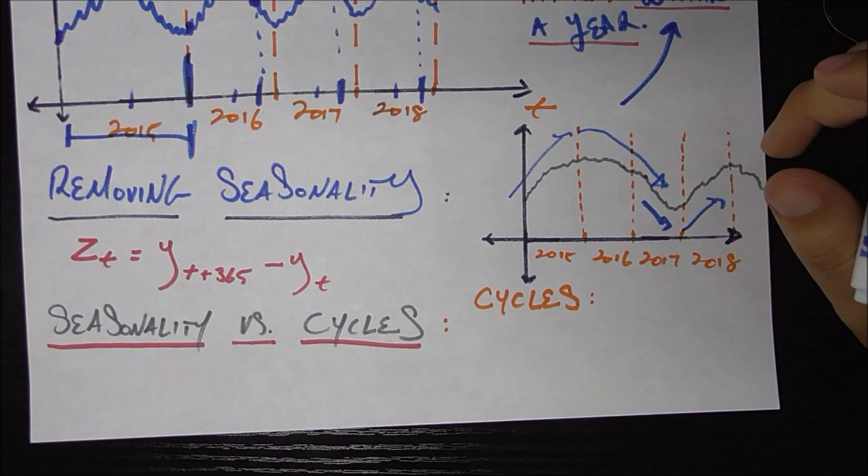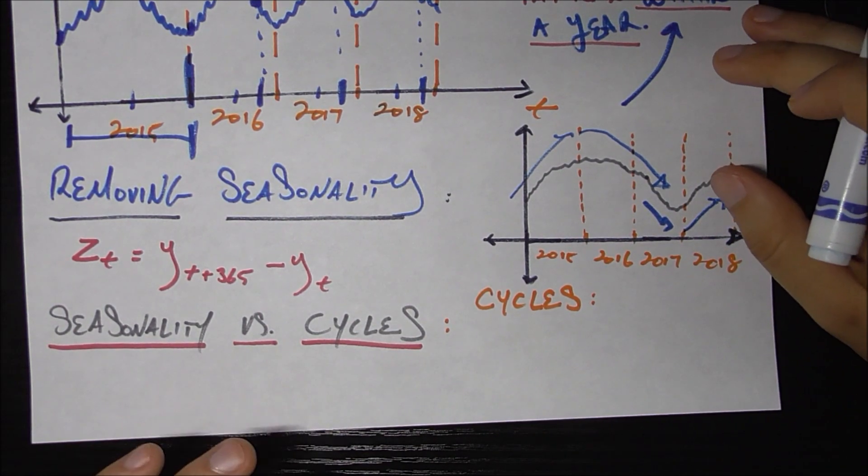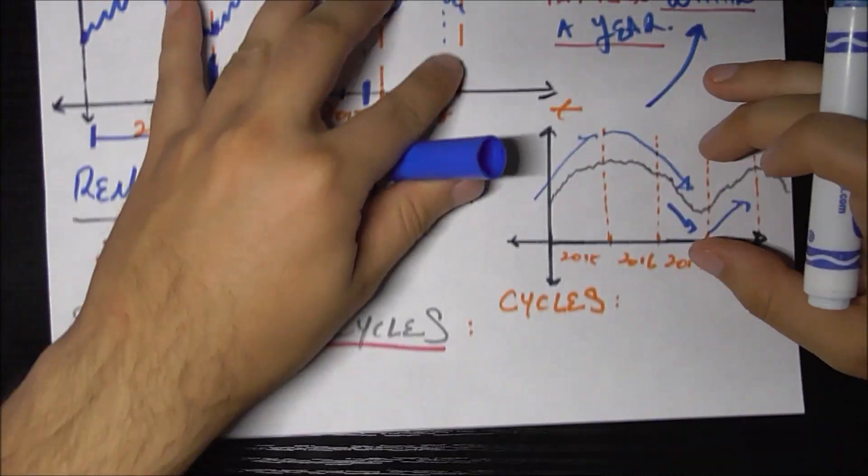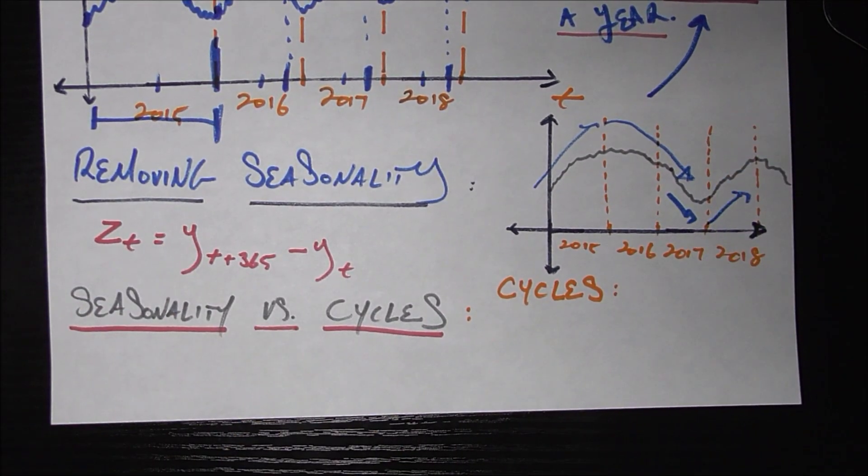So of course, we'll make some future videos on how to model seasonality in your time series. But this was just a brief introduction to what is seasonality? How do I get rid of it? And how is it different from cycles? So until next time.